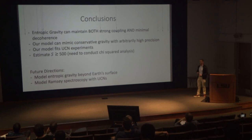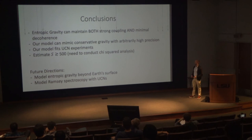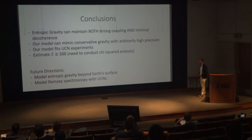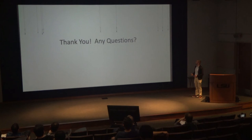Overall, we've shown that entropic gravity can both maintain strong coupling and also minimal decoherence. We can make S as large as we want to mimic conservative gravity. Qualitatively, our models seem to match results from these ultra-cold neutron experiments, and we estimate that S has a lower bound of about 500, though we need to conduct chi-squared analysis to find an optimal S value. Looking forward, we'd like to expand this model to gravity beyond Earth's surface and also simulate results from more precise cold neutron experiments such as Ramsey spectroscopy. Thank you very much for your time.